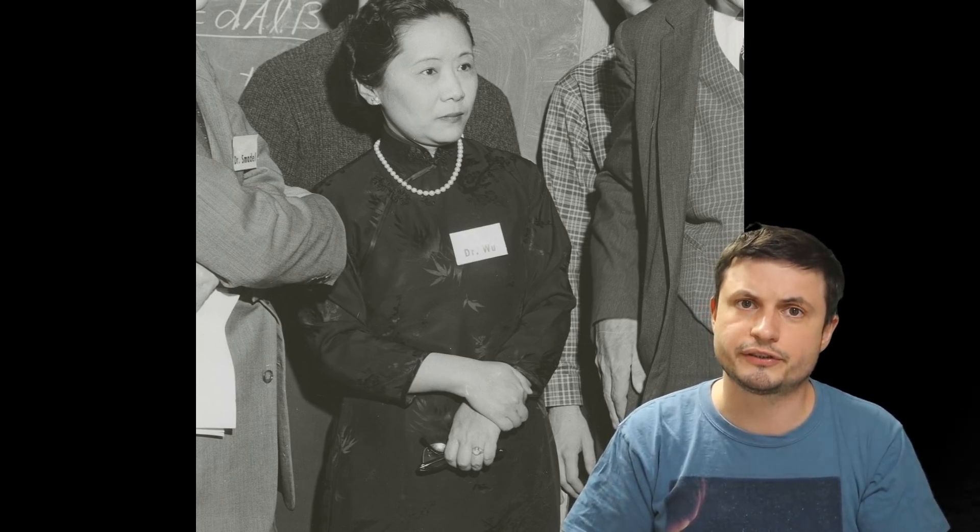But there were two scientists that were not happy with this. Two Chinese-American scientists working in the US who were not actually satisfied with the idea of maybe everything is symmetrical. They wanted to be absolutely sure. And having come up with a theory, they asked this lady right here, Dr. Wu, who was also a very famous Chinese-American theoretical physicist, to create an experiment and to test this idea.